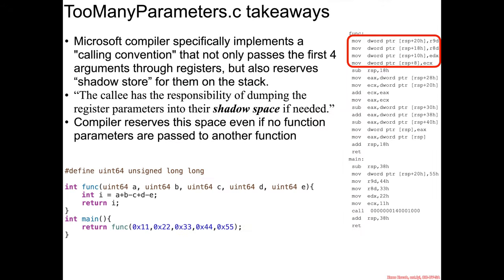So the takeaway from too many parameters is that Microsoft has something it calls a calling convention where it passes the first four arguments to a function through registers but also reserves space on this shadow store on the stack. This is also sometimes called the shadow space because there's a quote in there that says